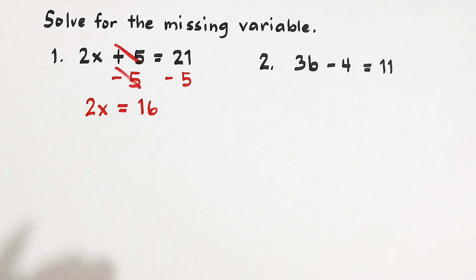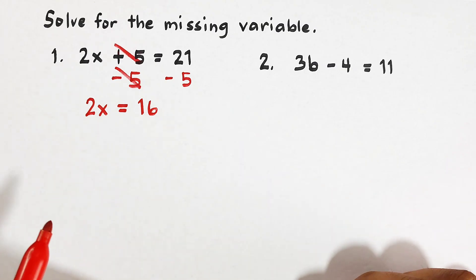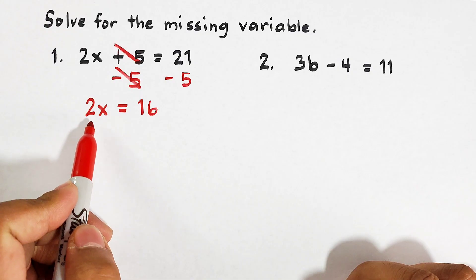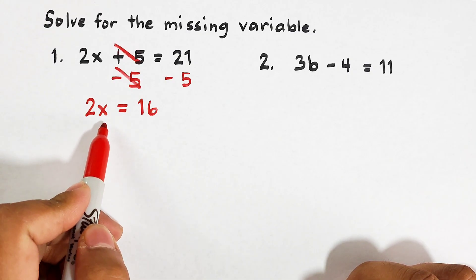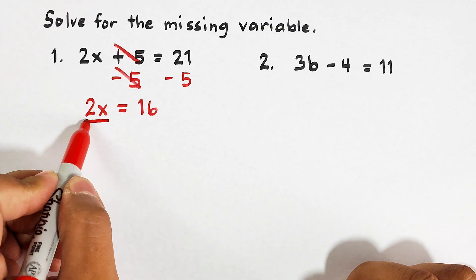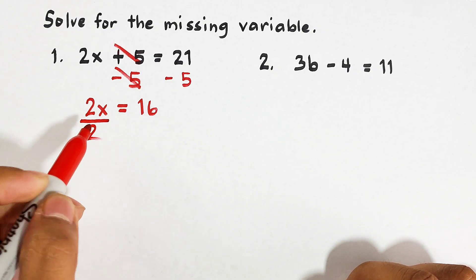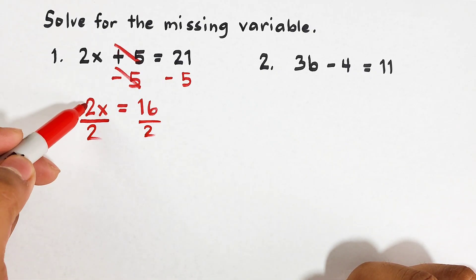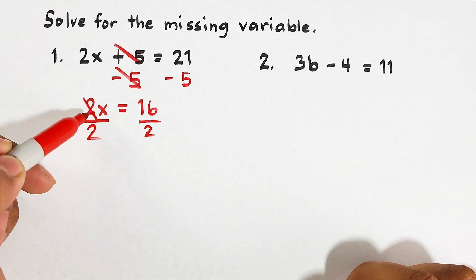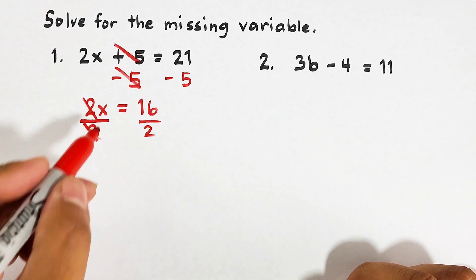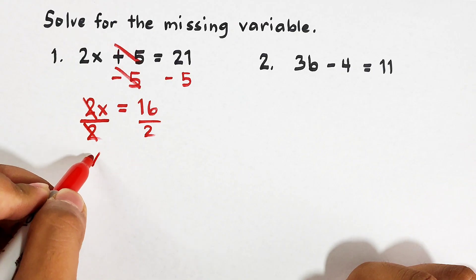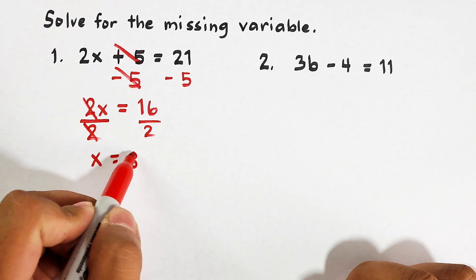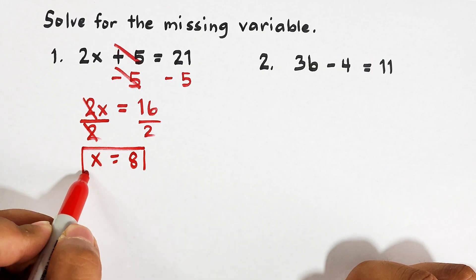For our second step, since 2 is the coefficient with variable x, we divide both sides of the equation by 2. Because 2 divided by 2 is 1, we can simply cancel the 2. What we have now is x is equal to 16 divided by 2, which is equal to 8. This is the value of x for item number 1.